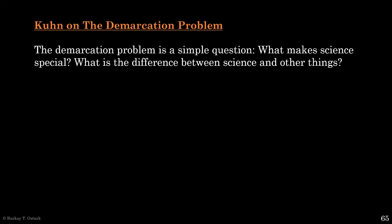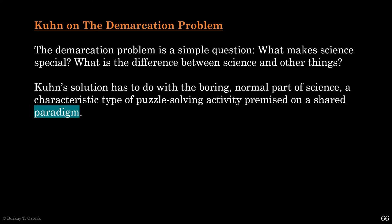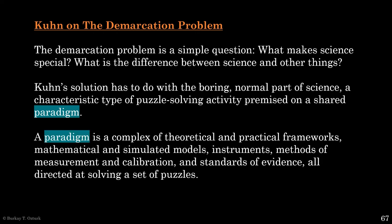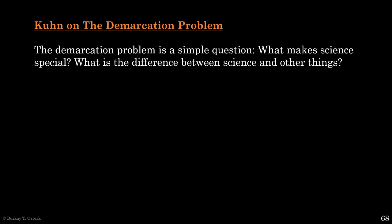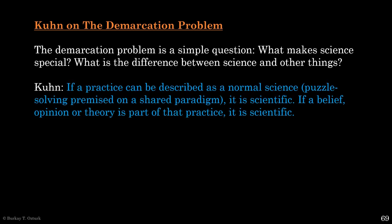Kuhn also offers a solution to the demarcation problem. Remember, the demarcation problem asks: what makes science special? Kuhn's solution has to do with the boring normal part of science — a characteristic type of puzzle-solving activity premised on a shared paradigm. Kuhn says: if a practice can be described as normal science, that is, puzzle-solving premised on a shared paradigm, then it is scientific. If a belief, opinion, or theory is part of that practice, then that belief, opinion, or theory is scientific.